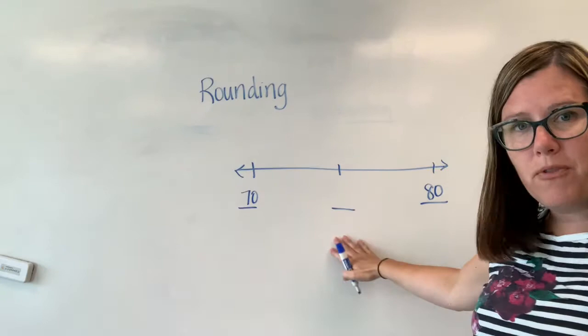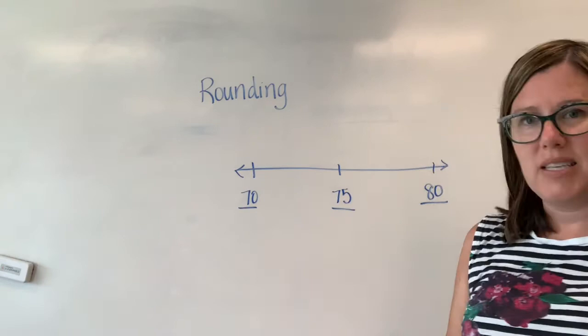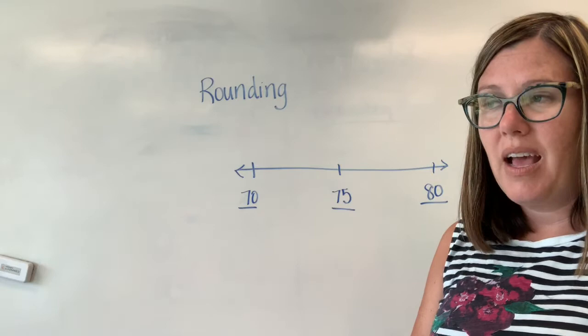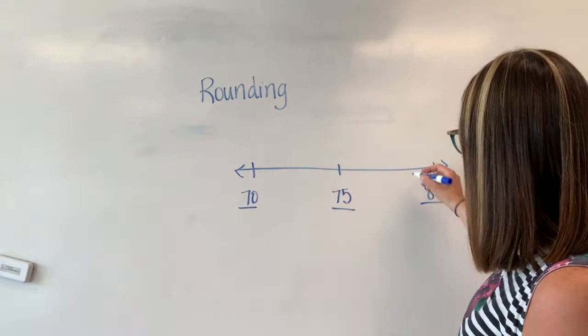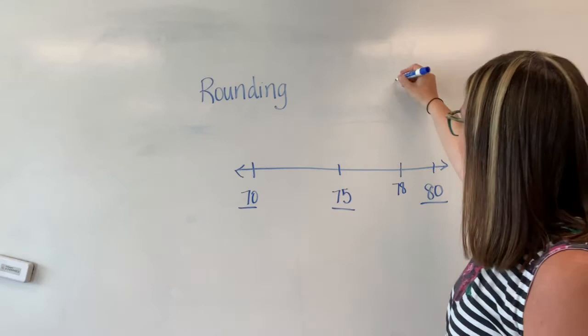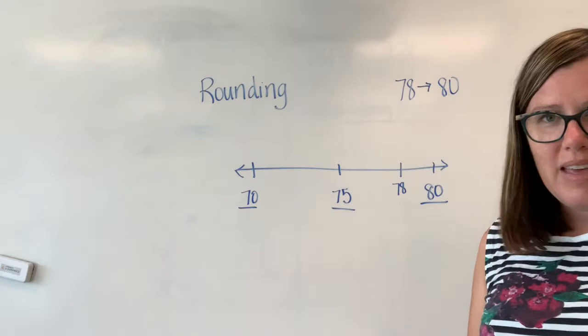Okay then what number falls in the middle of 70 and 80? Perfect 75. Okay now if I want to round 78 to the nearest 10 I need to put it on this open number line so I can see which number it falls closest to. So 78 is going to be almost 80. So therefore 78 rounds to 80.